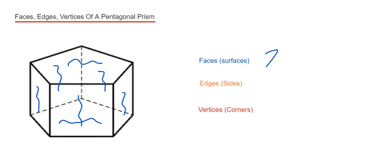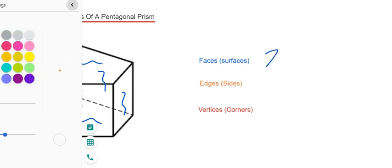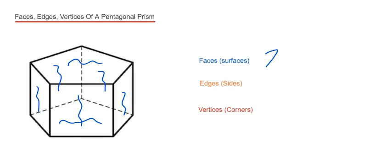Okay, and let's do the edges then next. So the edges are the sides of the shape. That's where 2 faces meet. So we just need to count the lines.